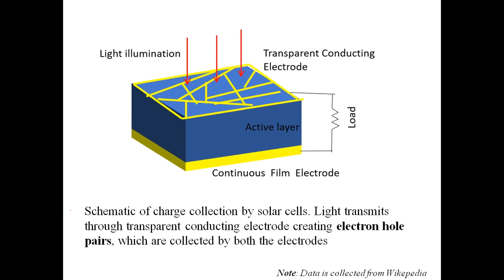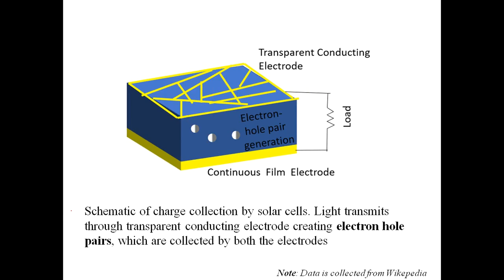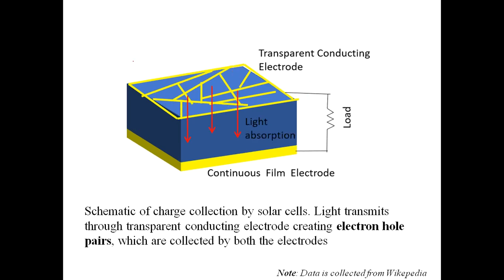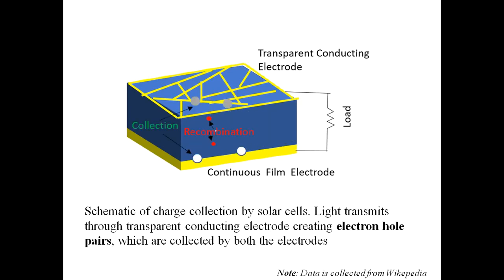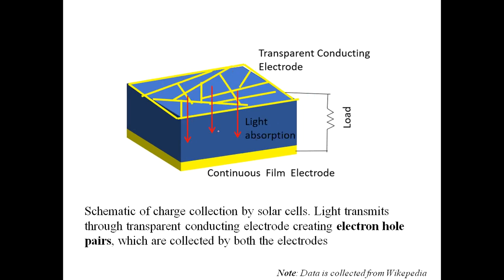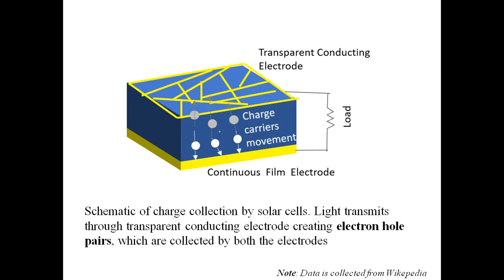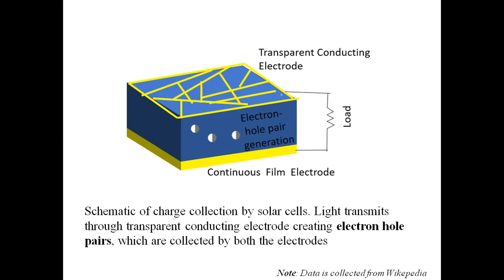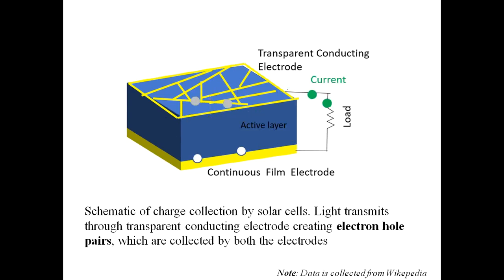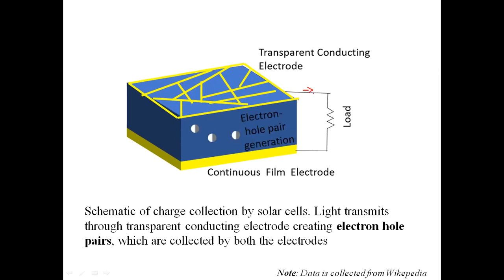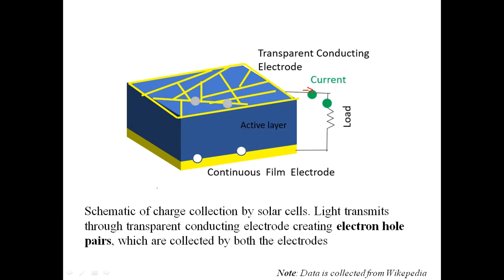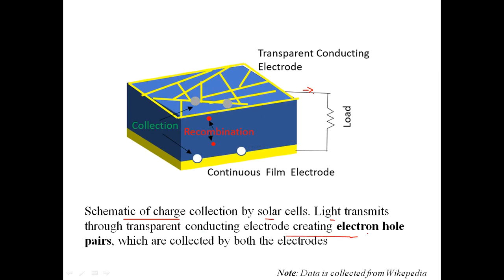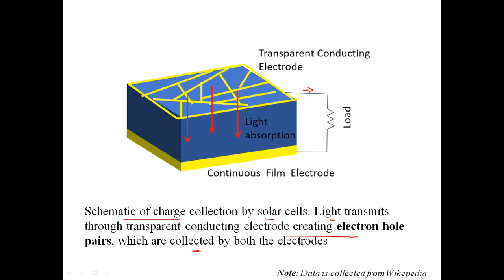This is a simple animation depicting how electron-hole pairs are generated. Light is illuminated, photons reach the structure and transfer energy, causing electron-hole pairs to be generated. These generated pairs move to the edges, recombine, and finally a current is produced. A potential difference will always exist. This is a schematic of charge collection by solar cells: light transmits through the transparent conducting electrode, creating electron-hole pairs which are collected by both electrodes.